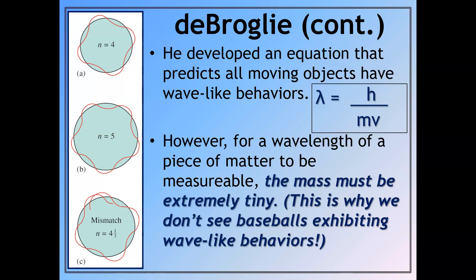However, for a wavelength of a piece of matter to be measurable or observable, the mass had to be very, very tiny. And this is why we don't see, for example, baseballs flying through the air exhibiting wave-like behaviors.